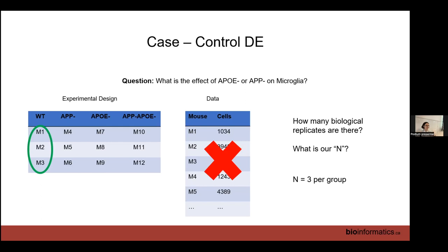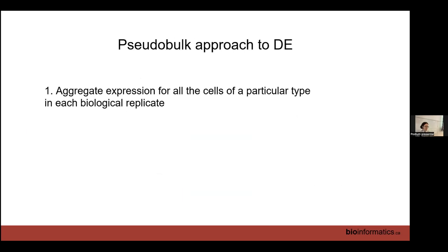If we took all of our single nucleus RNA-seq data and did differential expression treating each cell as a biological replicate, that would be wrong — we'd get everything as significant, when in truth we'd have very low power because we only have three biological replicates. The easiest way to handle this is pseudobulk: take expression in each cell type and aggregate it per biological replicate. Take all the microglia from mouse one and calculate average expression — that's one replicate. Do the same for mouse two and three. Now we can treat this like bulk RNA-seq with three replicates.